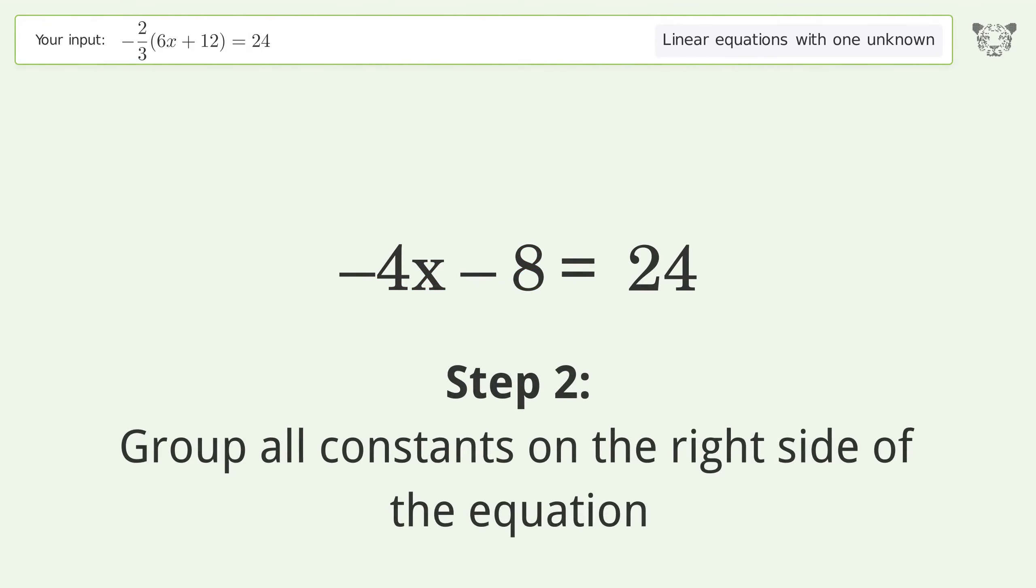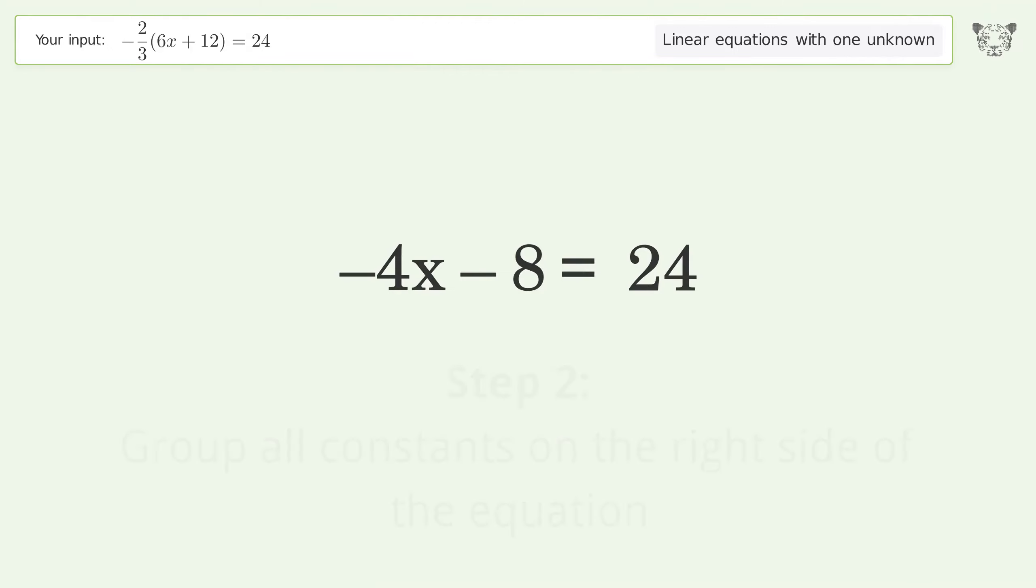Group all constants on the right side of the equation. Add 8 to both sides. Simplify the arithmetic.